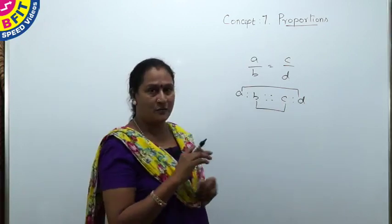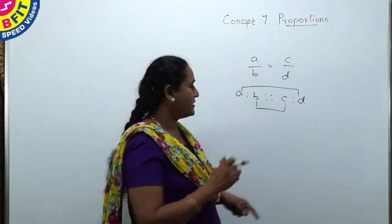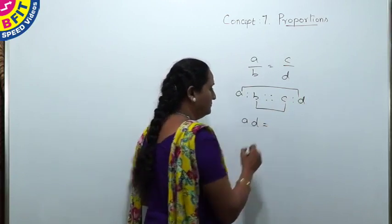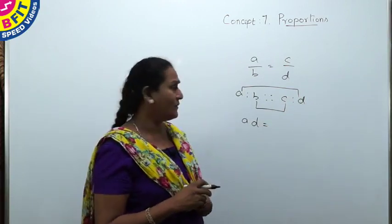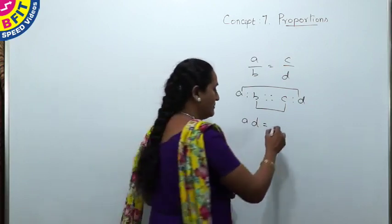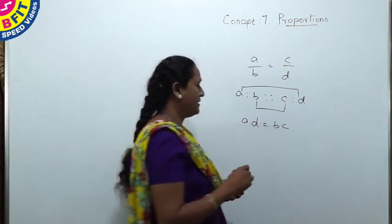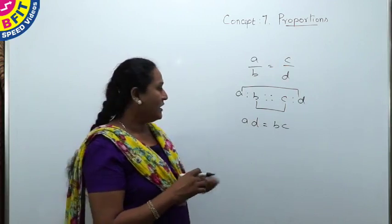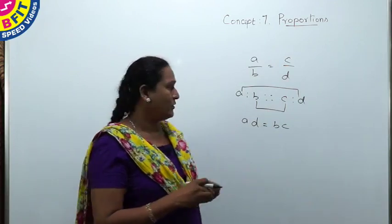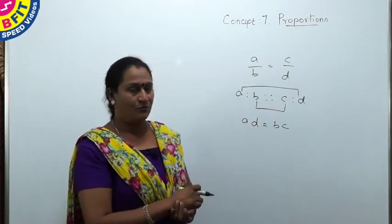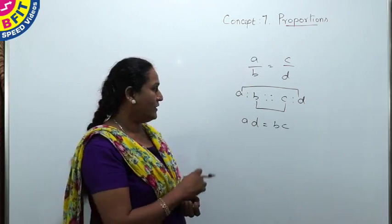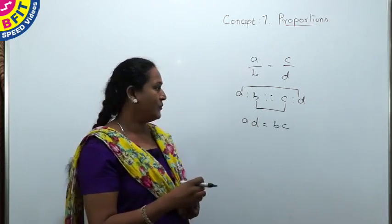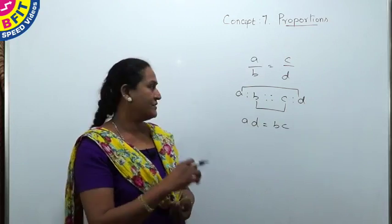In this format, the product of the extremes and the product of the means will always be the same. When ratios are in proportion, product of extremes — that is A×D — is equal to the product of the means, B×C. By using this property, if one value is missing, you can find that value. We will see a few examples: how to find the fourth proportion, third proportion, and mean proportion.